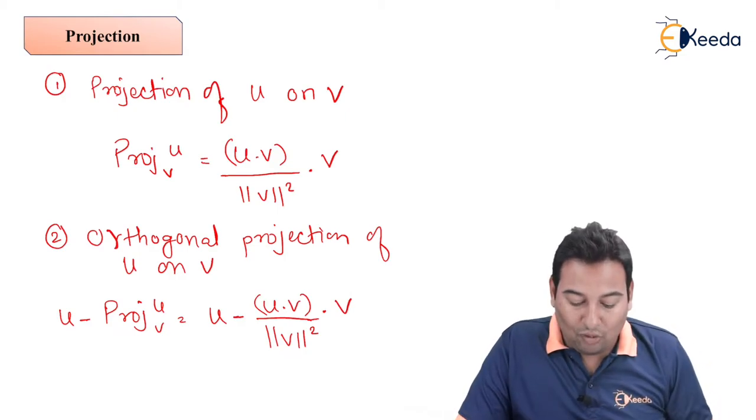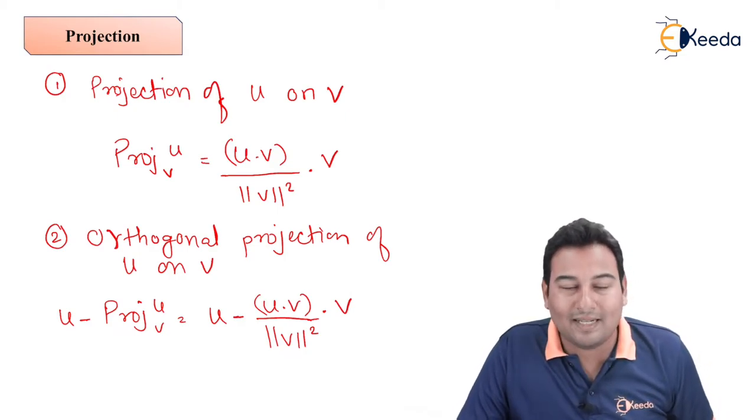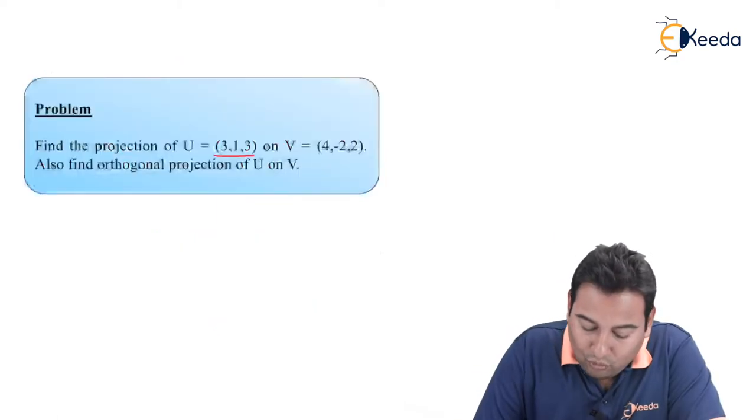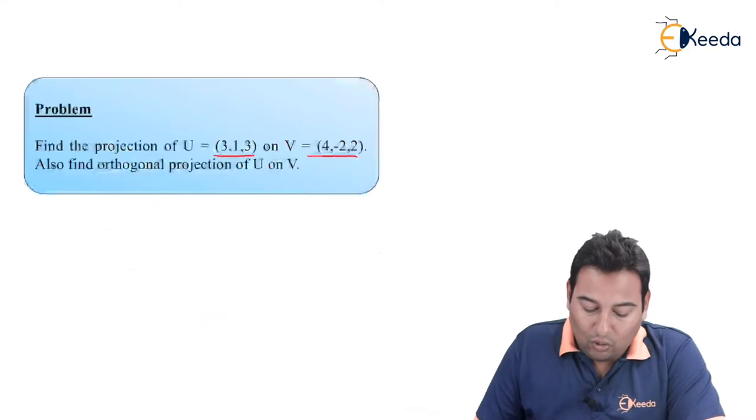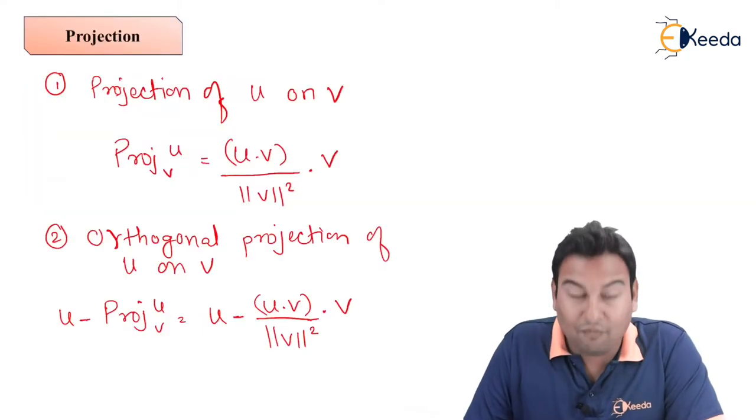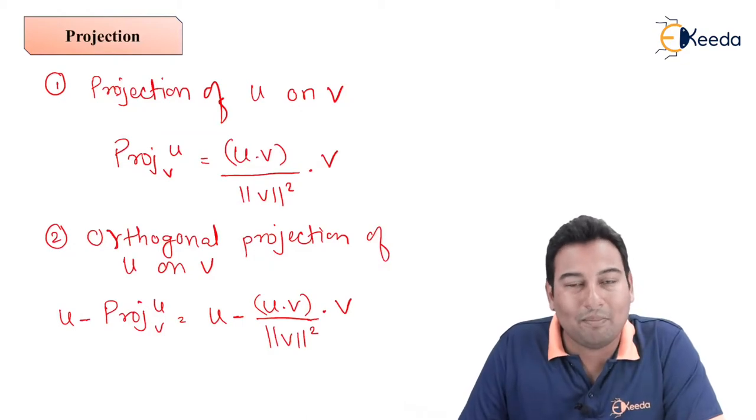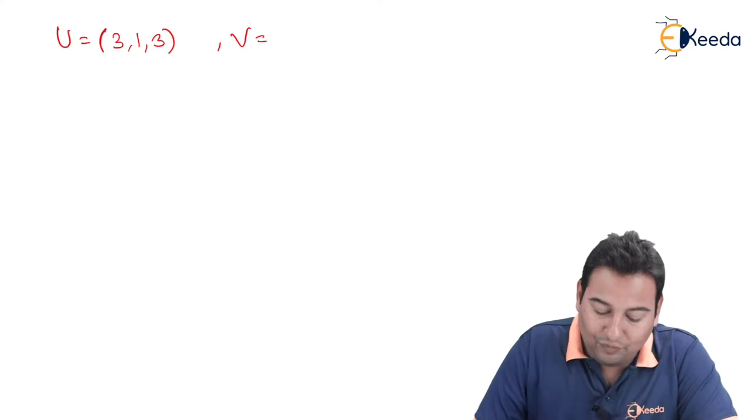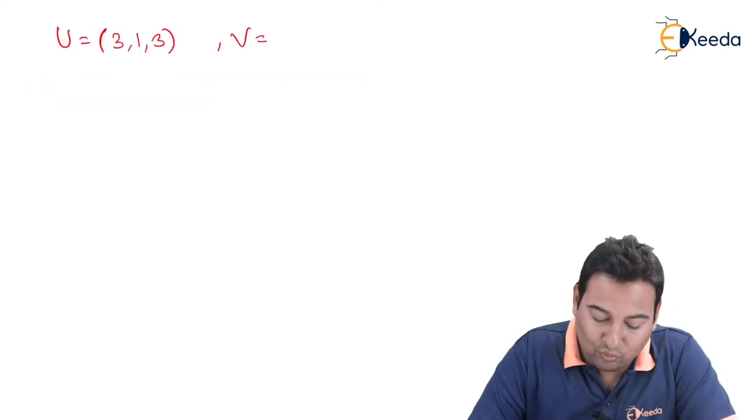These are the two formulas that we'll be using for solving the problem. Let's have a look at the given problem. Here we need to find the projection of u on v, and also we need to find the orthogonal projection. We'll discuss the formula here. Now, we'll see how to implement this formula. u equals (3,1,3) and v equals (4,-2,2).